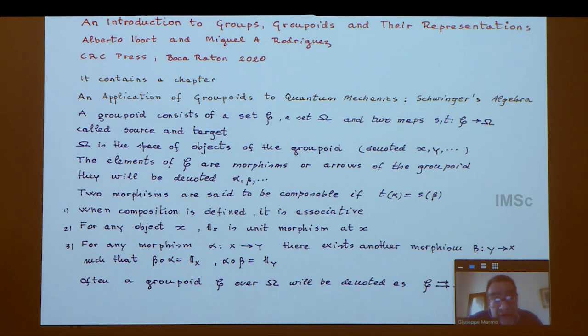A groupoid in categorical terms is simply a small category where each morphism is invertible. I don't know how much this definition appeals to a theoretical physicist, but you can think of a groupoid as having two sets: one is the set G and the other is set omega. Going to our previous pictures, the set G is the set of transitions.